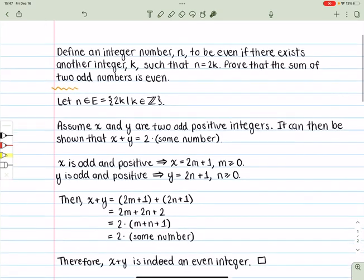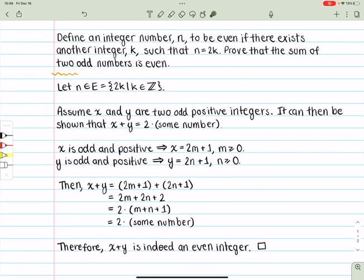So we're going to start by assuming two numbers, two odd numbers, so we're going to assume that x and y are two odd positive integers. We have to show that x plus y is equal to 2 times some number, so that some number is going to be this k and that's the definition of an even number, 2 times some number.